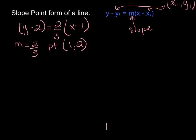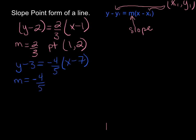Let's have a look at another example. Here we've got y minus 3 equals negative 4 over 5 times x minus 7. The first thing you want to notice right away is your slope — your line has a slope of negative 4 over 5, and it passes through the point 7 comma 3.